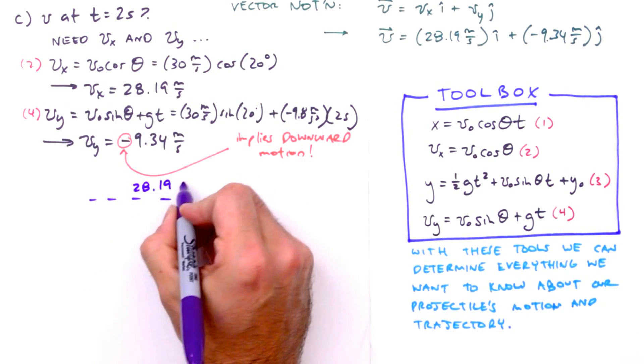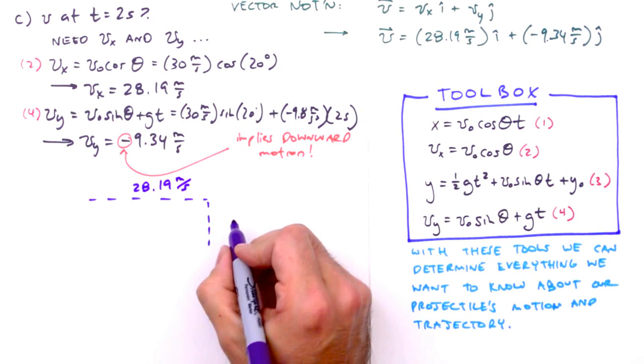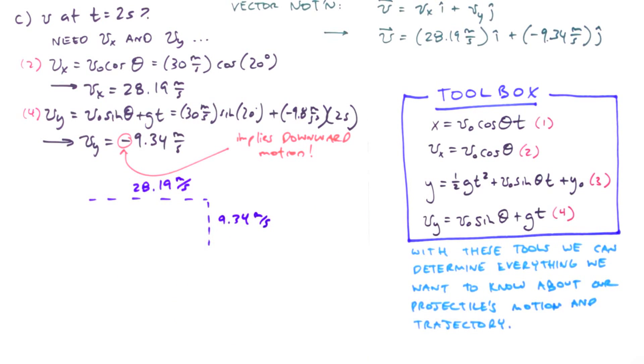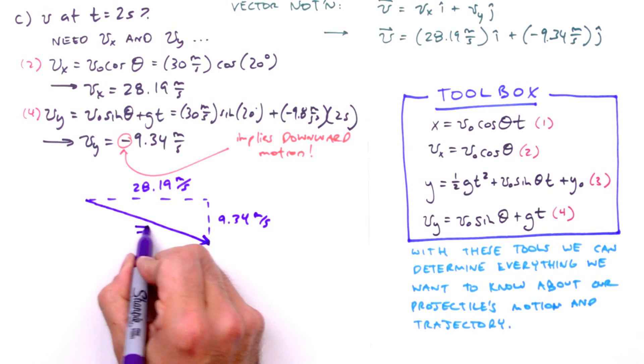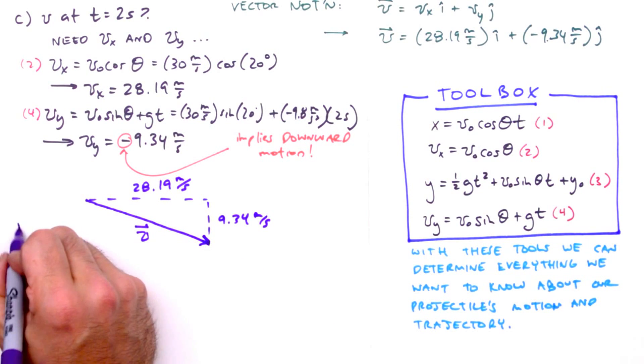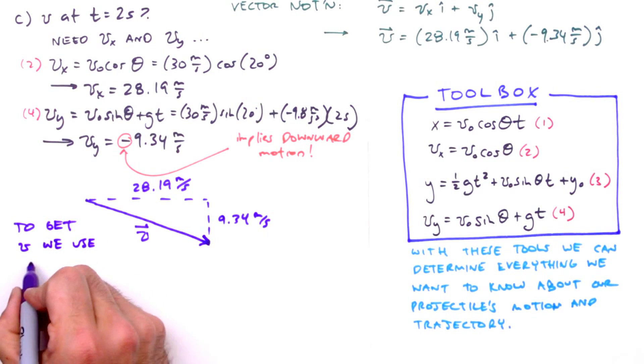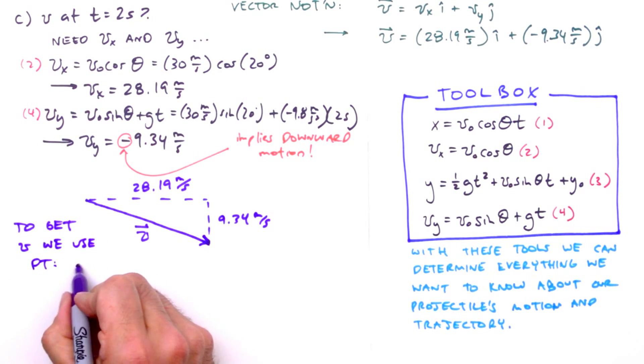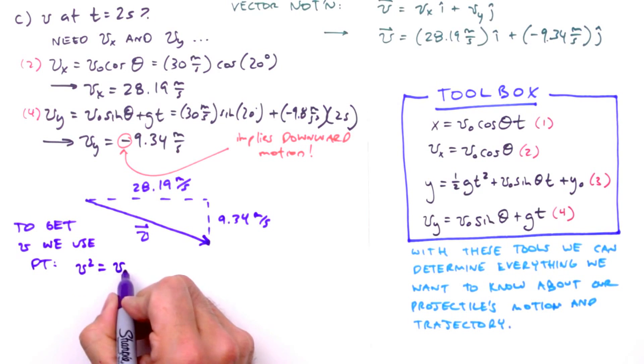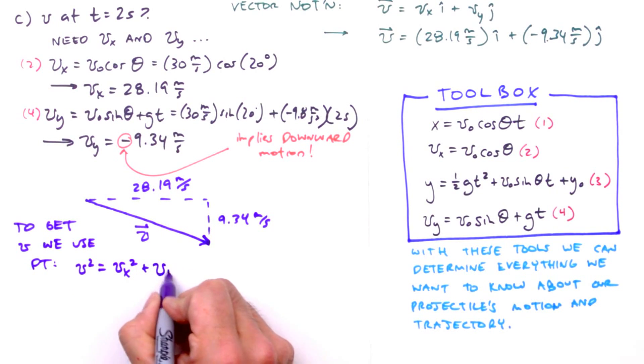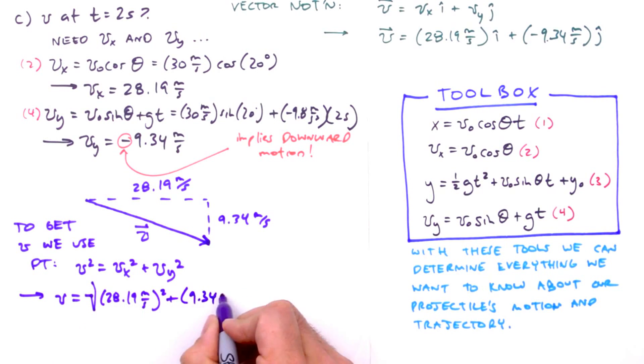So we've got 28.19 meters per second in the x direction and 9.34 meters per second in the negative y direction. We'll recombine these components to determine the magnitude of v using Euclid's 47th proposition, better known as Pythagoras's theorem. The square of the hypotenuse is equal to the sum of the squares of the legs. Taking the square root of both sides, and inserting our values, and dropping the plus or minus sign, we get a magnitude of 29.70 meters per second.